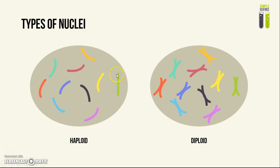An example of a haploid cell would be a gamete — for example, like a sperm cell and an ovum, or in other words, an egg cell in a female. And an example of a diploid cell would be any other normal body cell, for example like your skin cells or your liver cells.